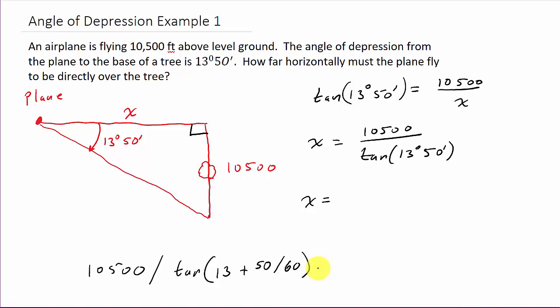So basically what it'll look like in your calculator, 10,500 divided by, and then you'll do tan. And most calculators will pop that parentheses there. And then you'll have 13 plus 50 divided by 60, and close your parentheses. And then you'll hit enter. And I'll round it to one decimal place, two.